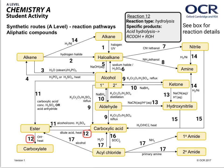Reaction number 12 is hydrolysis. Because you've got acid hydrolysis and alkaline hydrolysis, you've got to be careful to get the product the right way around. For acid hydrolysis, the product will be a carboxylic acid and an alcohol. With the alkaline version, you get a carboxylate ion and an alcohol. For example, if you use sodium hydroxide, you'd get sodium carboxylate.